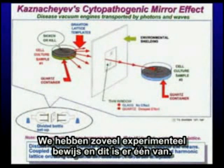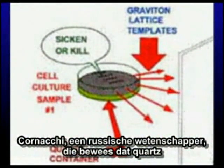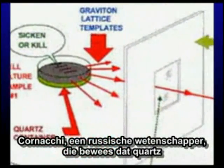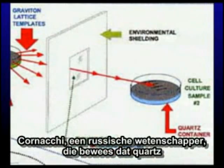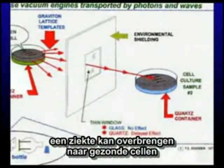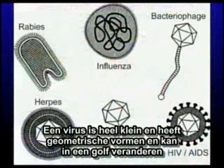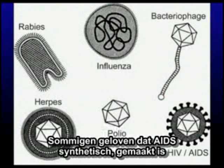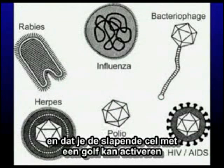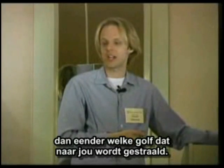We already have plenty of experimental evidence. This is Kaznachiev, a Russian scientist who passed a diseased cell culture through a shield — when it was glass, there was no effect on the healthy tissue. But when he passed it through quartz, the quartz allowed the disease to be transmitted to the healthy cells. A virus is a little tiny thing; most viruses are shaped like geometry. A virus can turn into a wave. Some people believe AIDS is synthetic and that you can activate the dormant virus with a wave. It is important to remember that your consciousness has more power than any wave that could ever be beamed at you.